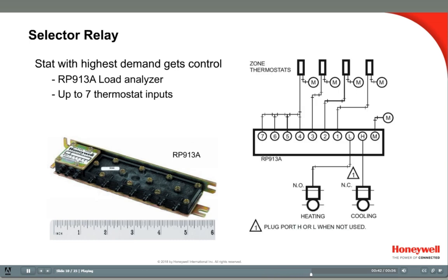In this example, the coldest zone with the lowest pressure from a direct-acting thermostat modulates a normally open heating valve. And the warmest zone, with the highest pressure from a direct-acting thermostat, modulates a normally closed cooling valve.